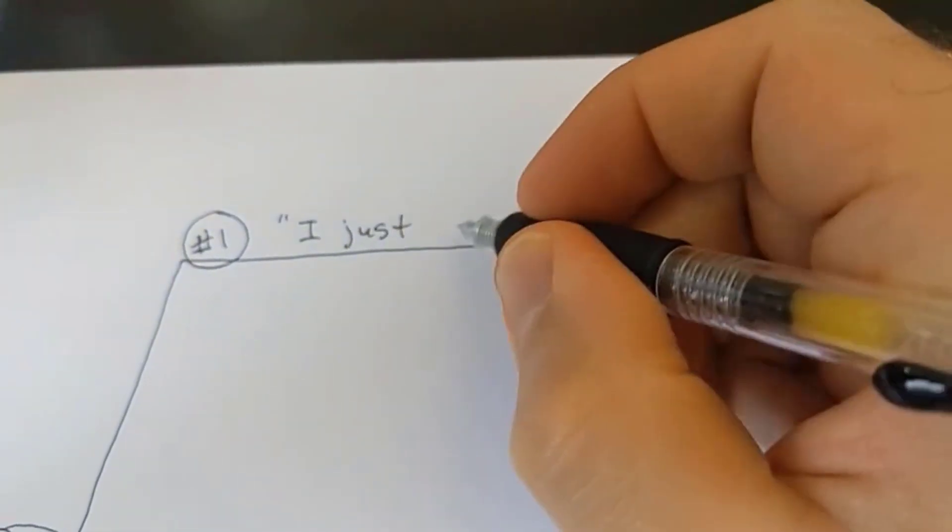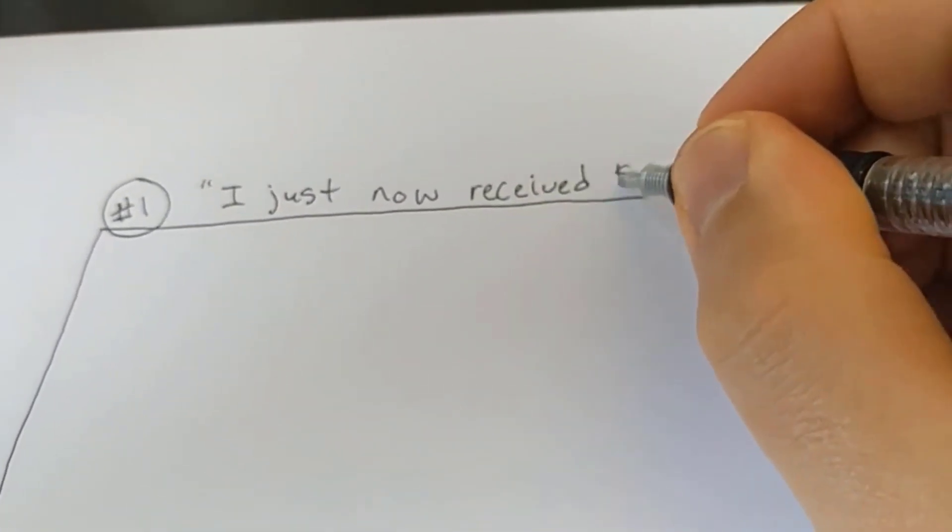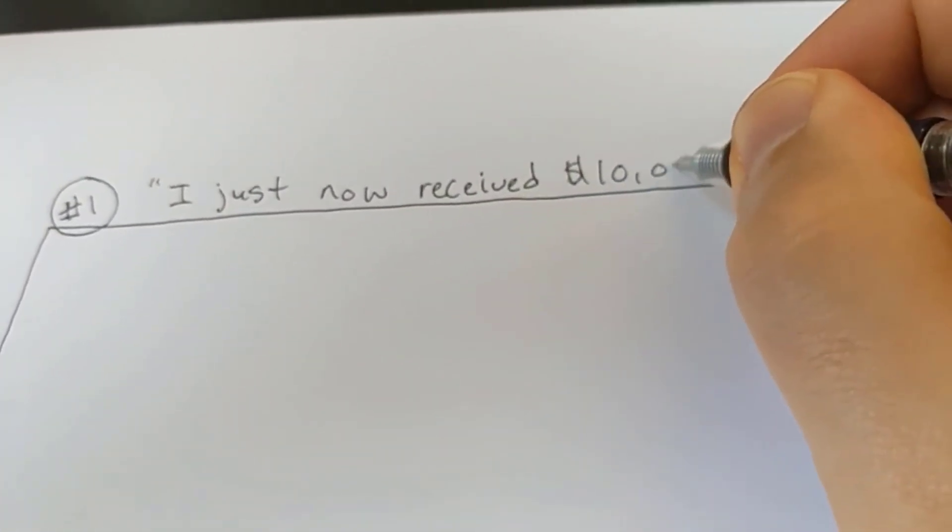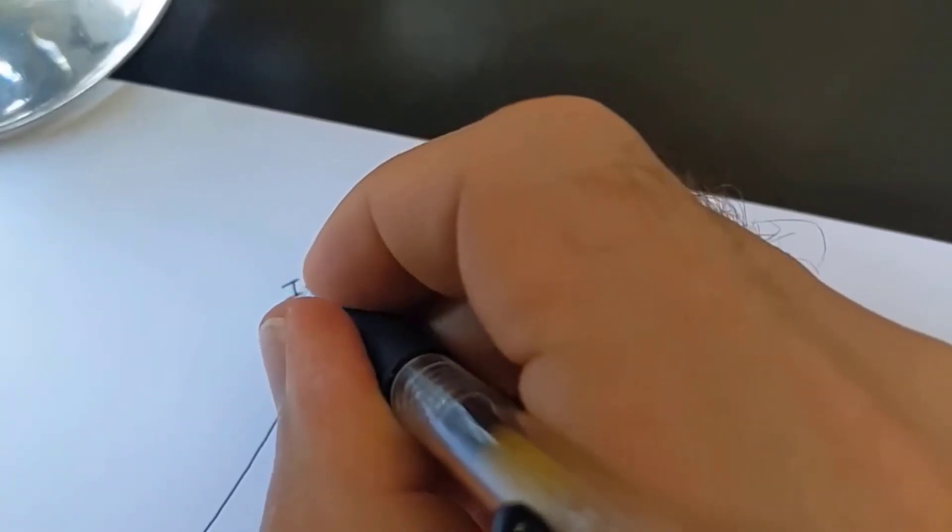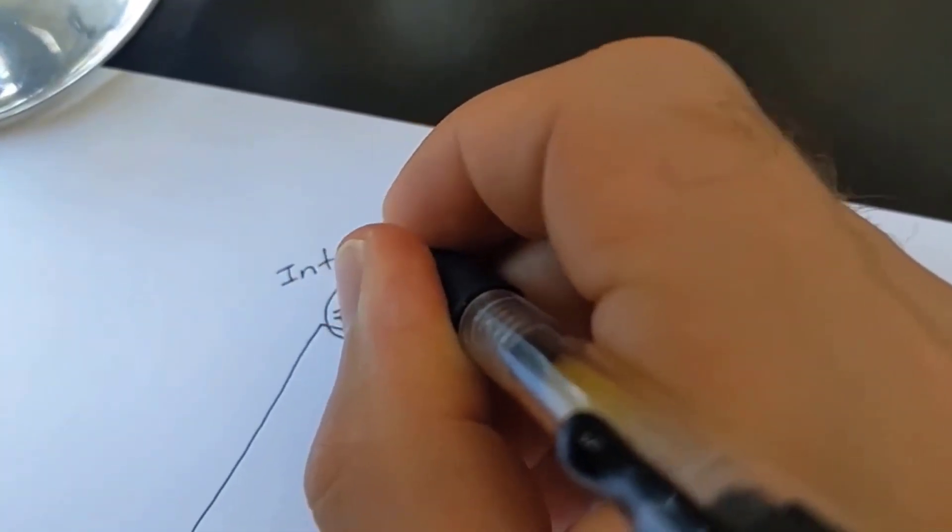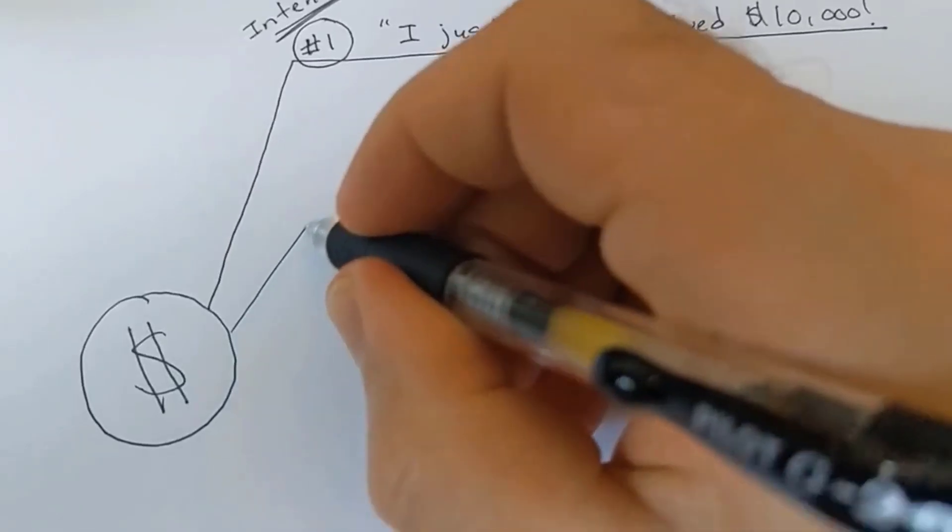We're going to start with these lines here. On the top line, we're going to write number one. You're going to write down an intention that you want to manifest. So we'll do an example here on money: I just now manifested $10,000. But you can write down any intention, it doesn't matter what it is, any area of life and any amount that you want as well.